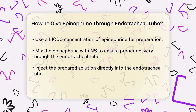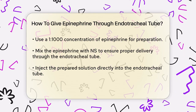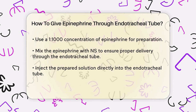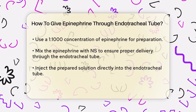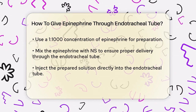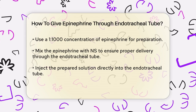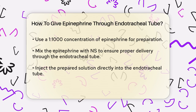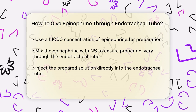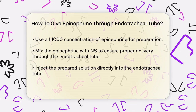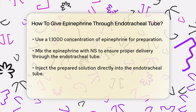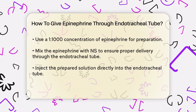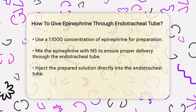This is important because the concentration and volume ensure the drug is delivered correctly through the endotracheal tube. When the solution is ready, you need to administer it directly into the endotracheal tube. After injecting the epinephrine solution, follow it with a 5-milliliter normal saline flush to help push the drug further into the lungs and improve absorption.